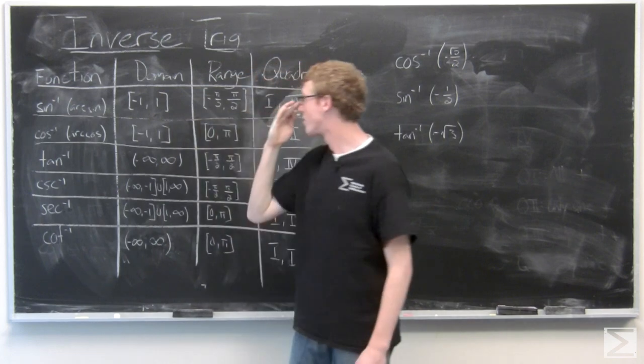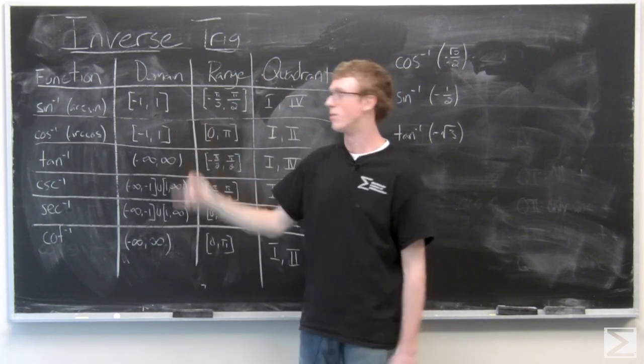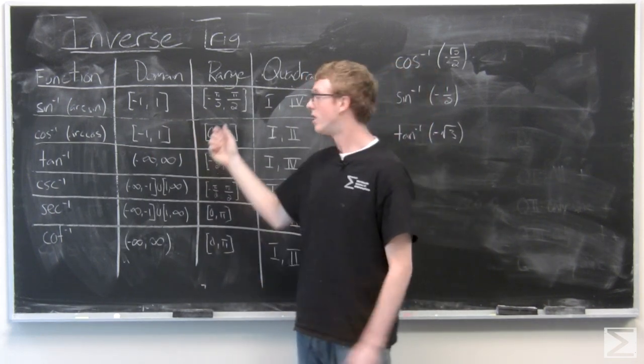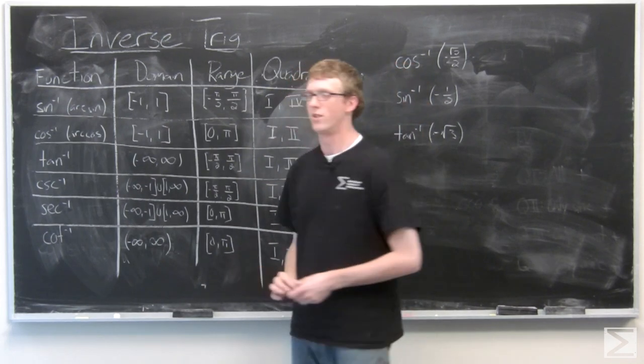We go ahead and restrict the domain from negative π over 2 to π over 2 and then we flip the domain in range. So the new domain of inverse sine is negative 1 to 1 and the range is negative π over 2 to π over 2.